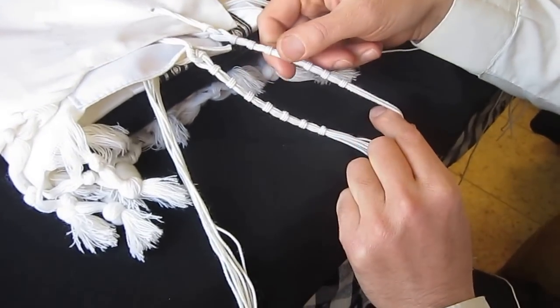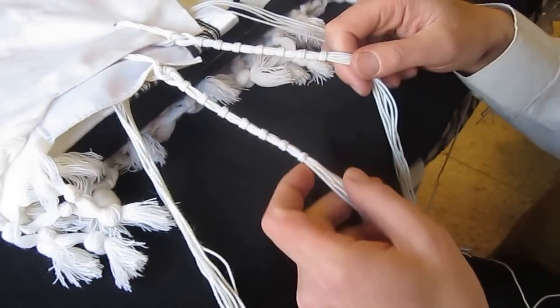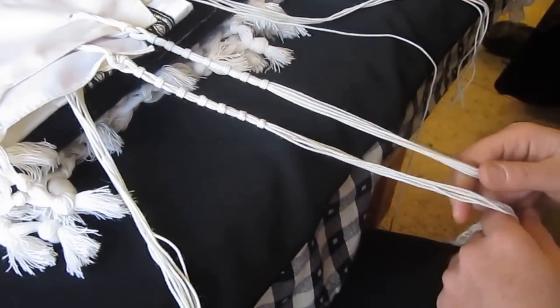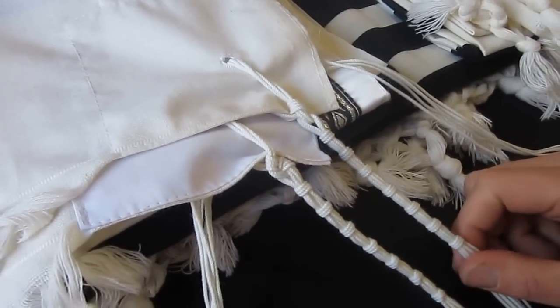This is called the Rambam tying. There are Yemenites who wear it today, to this day. We often tie chelet with this kind of knots. These are very unusual knots.